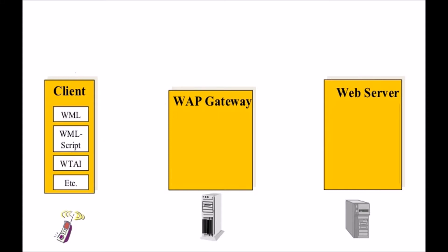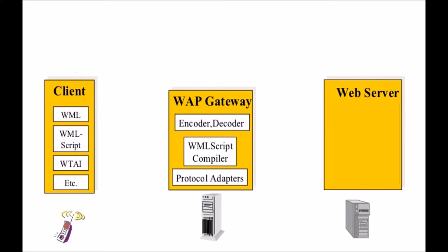The client has different components like WML, WML Script, and WTAI. The WAP gateway contains components like encoder/decoder, WML Script compiler, and protocol adapter.